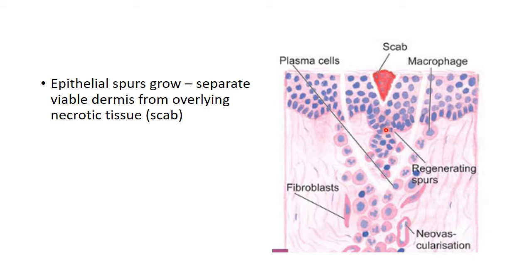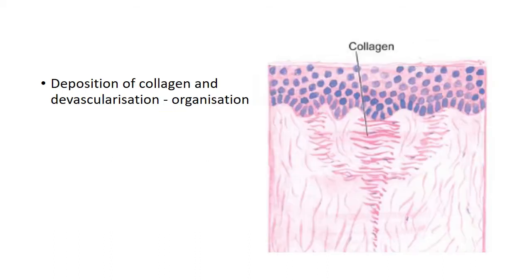These are called epithelial spurs. These epithelial spurs — the migrated epidermal cells — separate the underlying viable dermis from the overlying necrotic material and clot. This overlying necrotic material and clot, now called the scab, is cast off. So the cells from the basal layer of the epidermis proliferate and migrate towards the incisional space, separating the underlying viable dermis from the overlying necrotic tissue and blood clot, which is then cast off as scab.